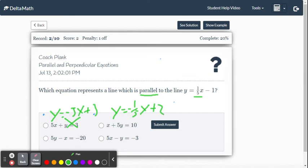This one here, we add x to both sides. So you get 5y equals x minus 20. Then we divide by 5. So we're going to get y equals 1 fifth x minus 4. There you go. That's our winner right there.